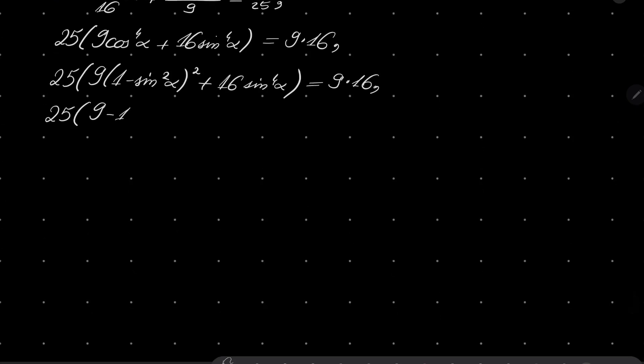So we have 25 times: 9 minus 18 sine squared of alpha plus 9 sine to the fourth power of alpha, plus 16 sine to the fourth power of alpha equals 9 times 16.